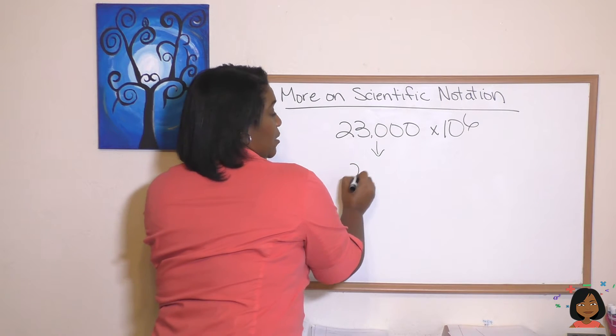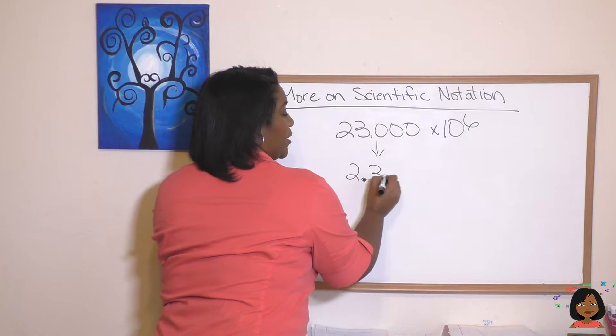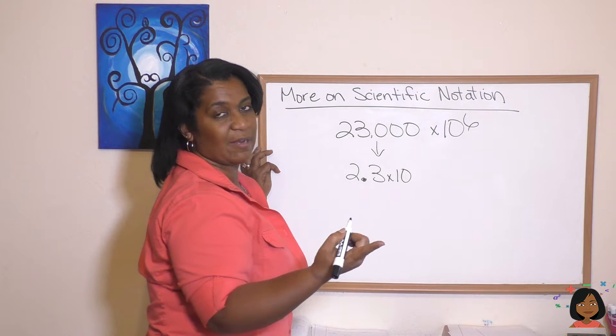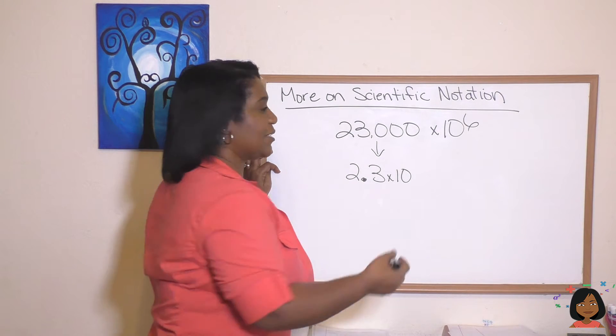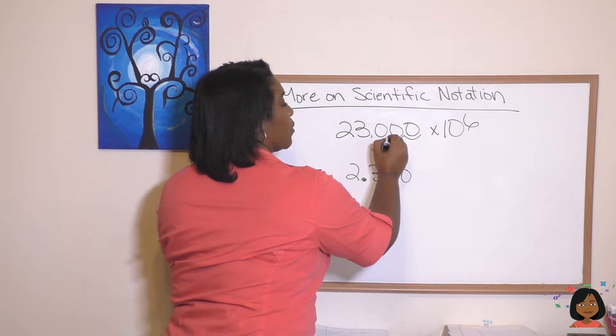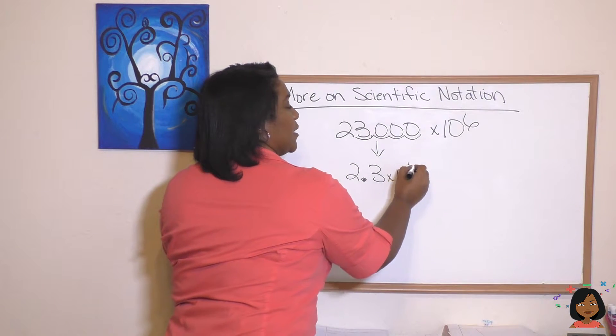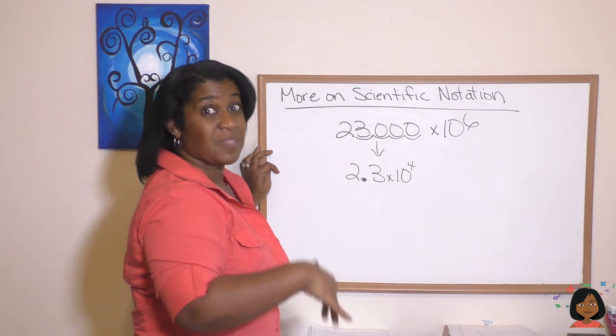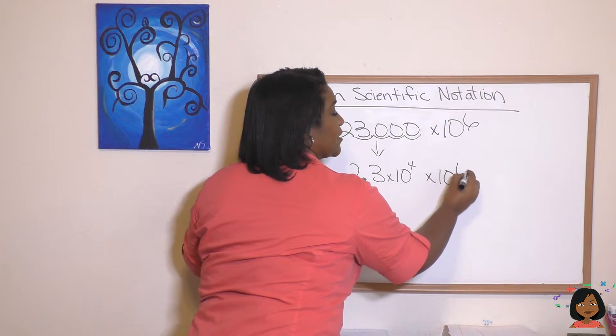Which would be 2.3 times ten to the—let's figure out how many spaces we need to move that decimal—one, two, three, four—times ten to the fourth. Now we can multiply that ten to the sixth, which is going to be 2.3 times ten, add my exponents, four plus six, and I'm going to get ten to the tenth power.